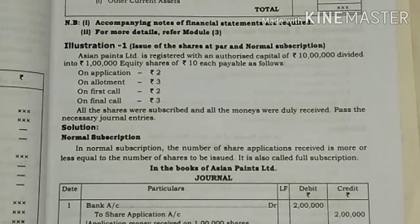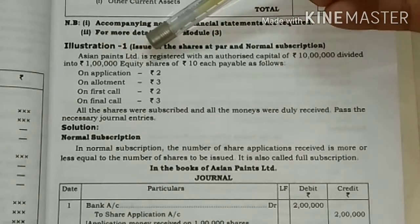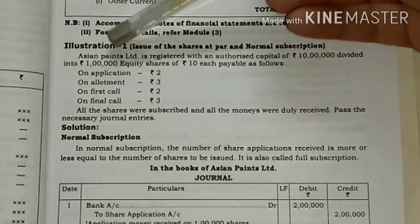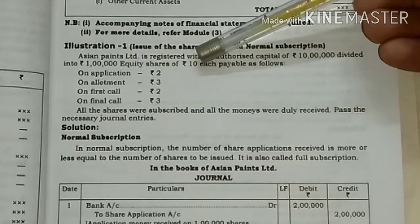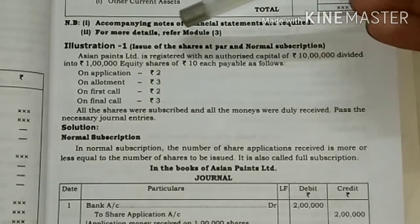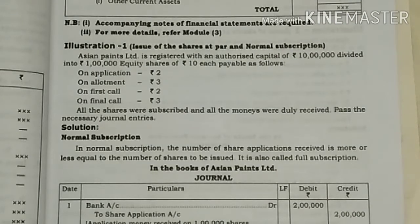Corporate Accounting. We shall start with our first unit and first illustration. Asian Pains Limited is registered with an authorized capital of rupees 10 lakhs, divided into 1 lakh equity shares of rupees 10 each. This is Illustration 1: Issue of shares at par and normal subscription. Par means normal face value — a ₹10 share issued at face value.